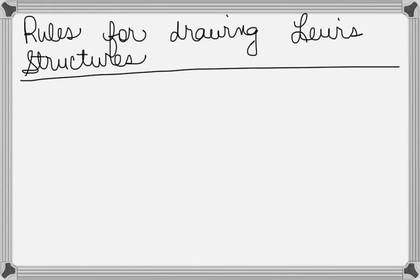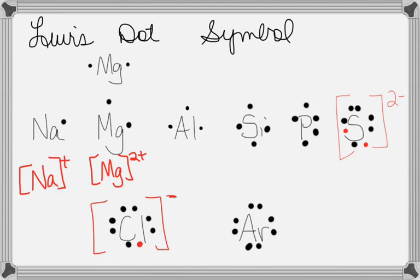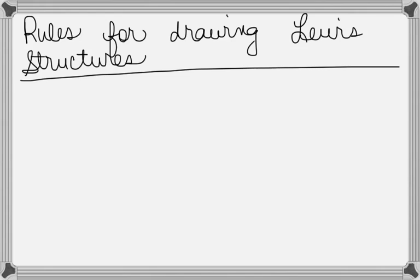The rules for drawing Lewis structures. What we just looked at back here are Lewis dot symbols. Lewis dot symbols are for a single element, it's just drawing the symbol. But when we're talking about now drawing Lewis dot structures, we're talking about an actual compound that's got more than one kind of atom in it and drawing its structure.